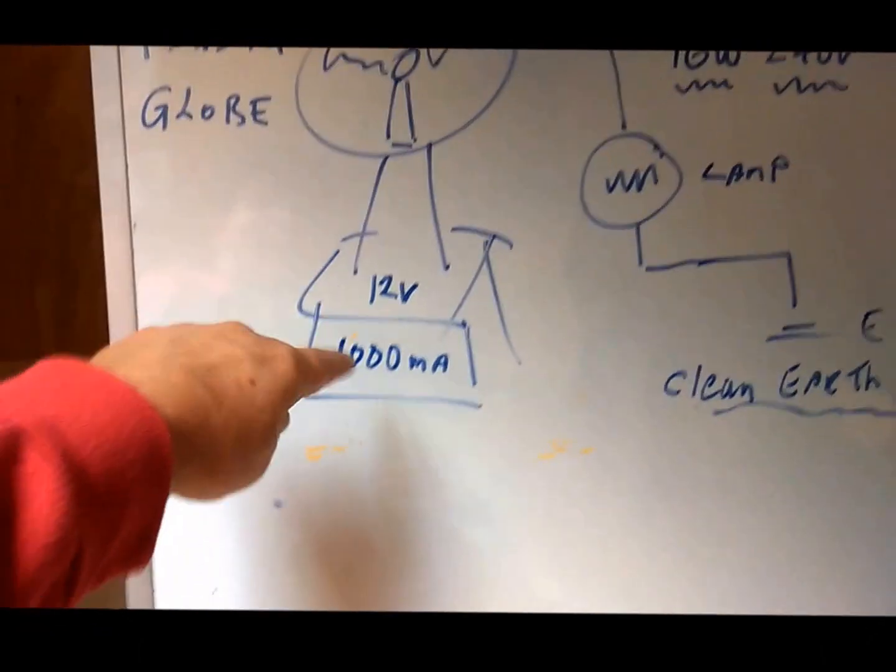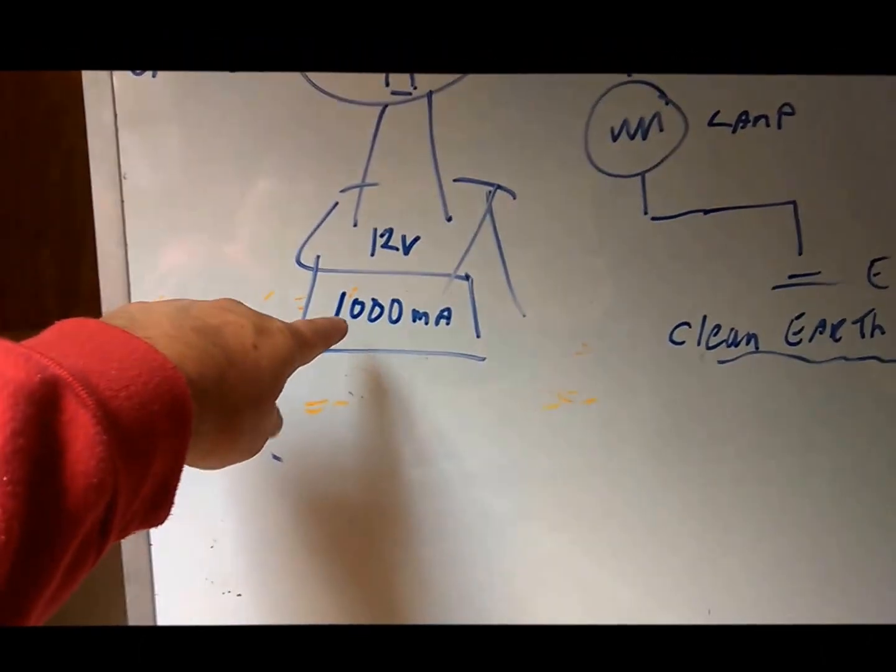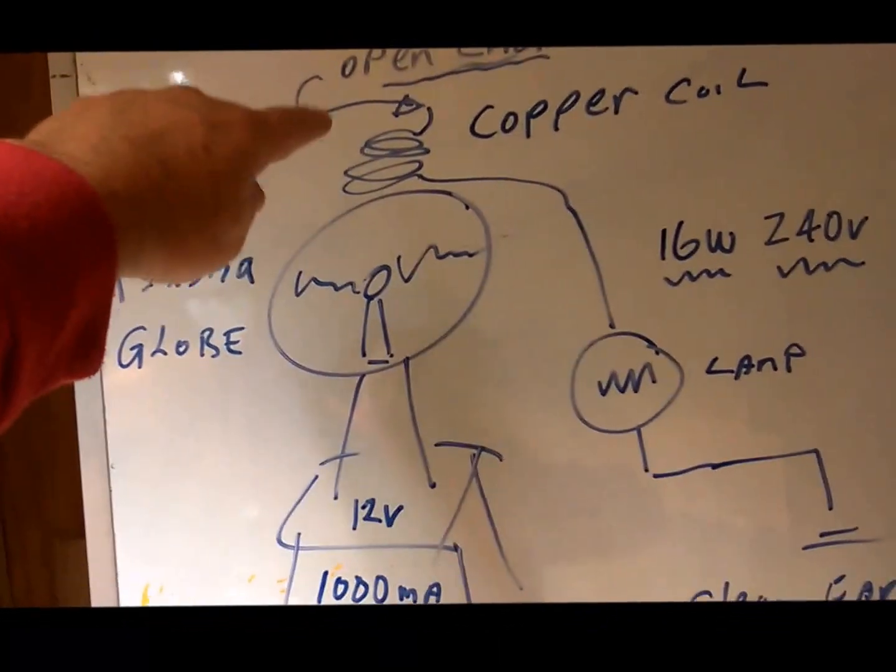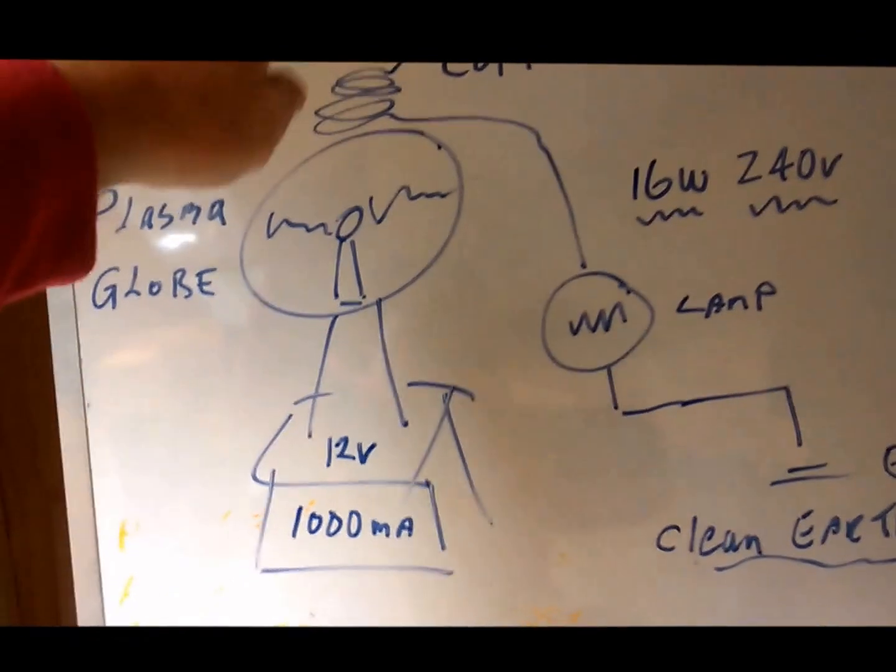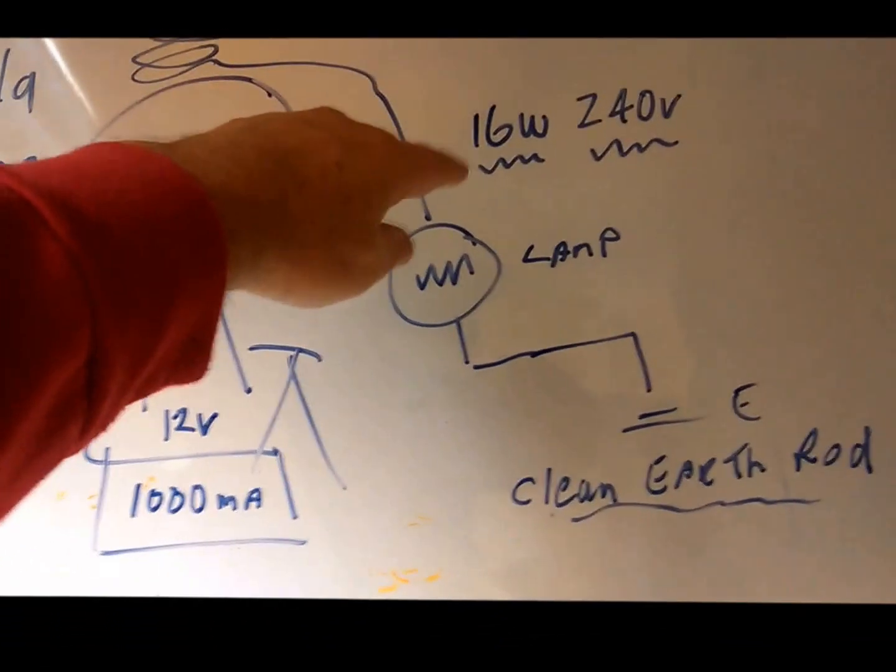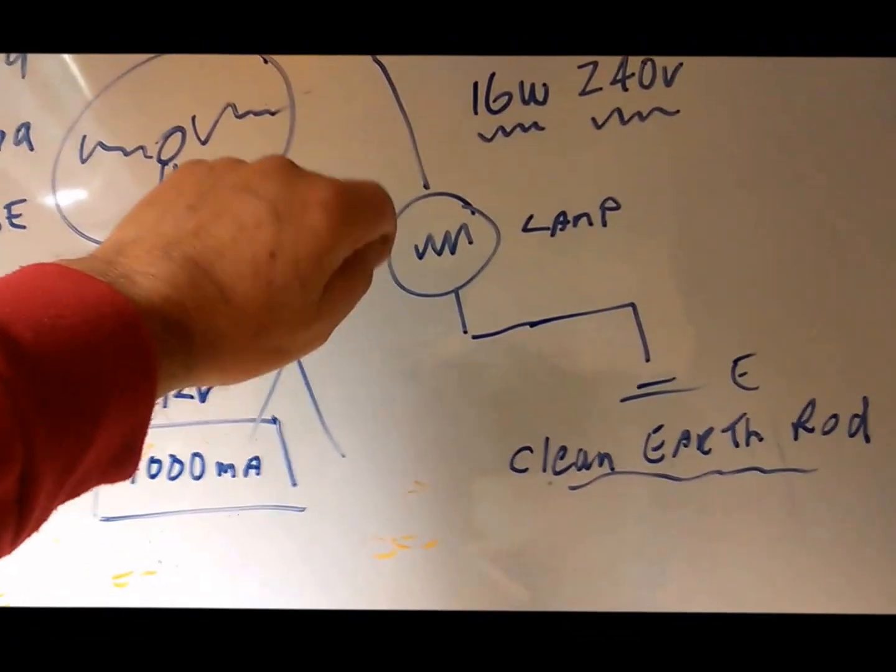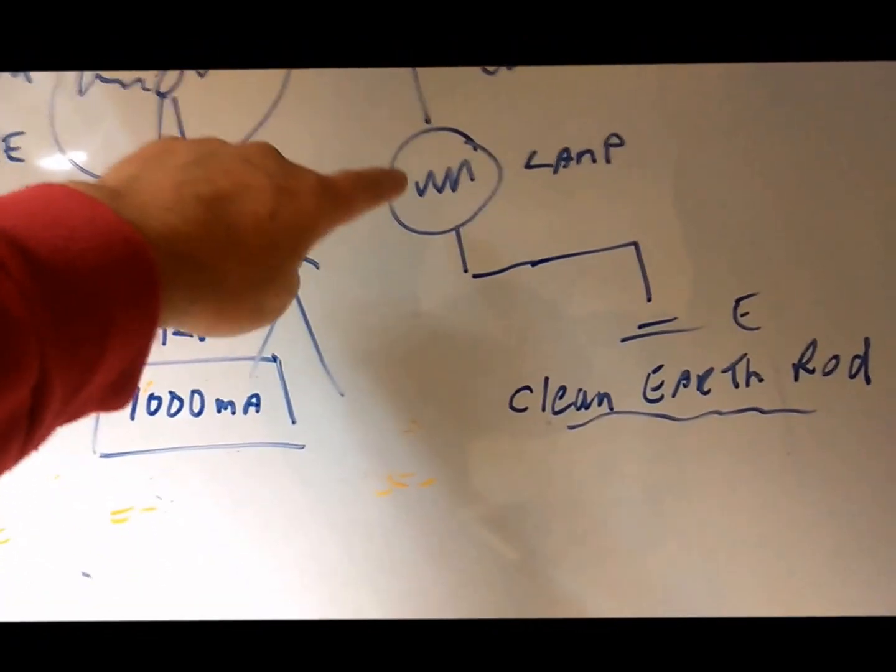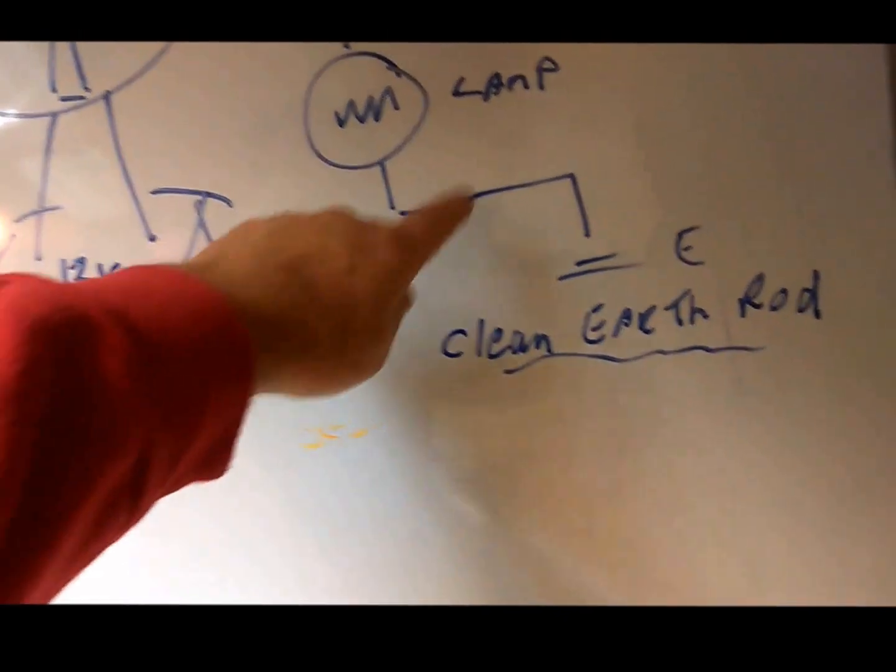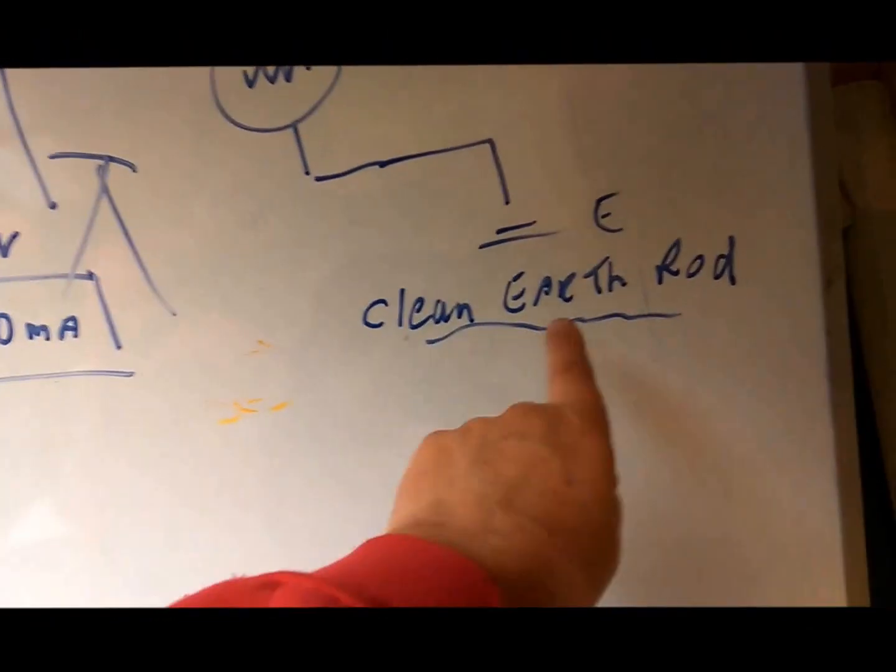In the meantime, the scenario we've got is the Tesla lamp here or globe - it's 12 volt, 1000 milliamp. I'm going to stick a copper coil on the top of it, just a simple copper coil, and I'm going to put it through a 16 watt 240 volt fluorescent lamp or tube.